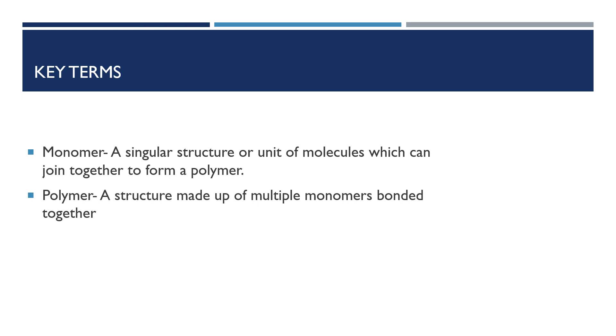A monomer is a single structure or unit of molecules which can join together to form a polymer. A polymer is a structure made up of multiple monomers bonded together.